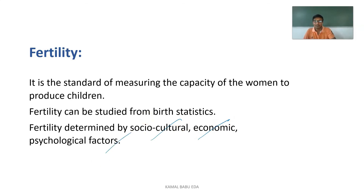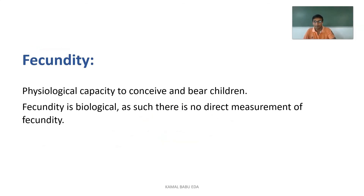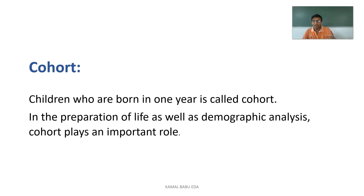Fecundity is the physiological capacity to conceive and bear children. It is biological in nature and there are no direct measurements for fecundity. Cohort refers to children who are born in one year — cohorts play an important role in demographic analysis and life participation studies.